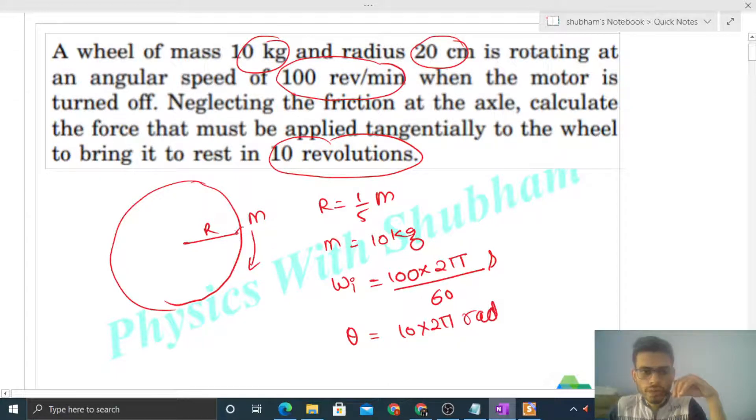So for that we have to apply a force on this wheel in tangential direction. Let's say we are applying a force capital F on this wheel in the tangential direction. So it's capital F's value we have to find out.